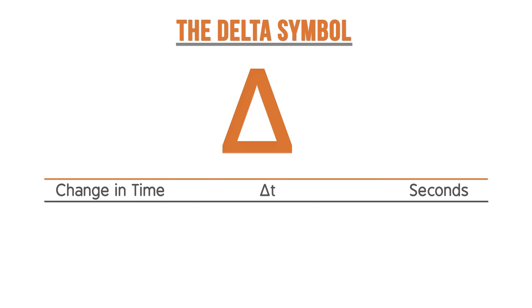The value of the change in time is the final time minus the initial time, or delta t equals tf minus ti.